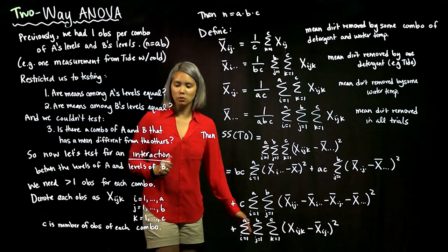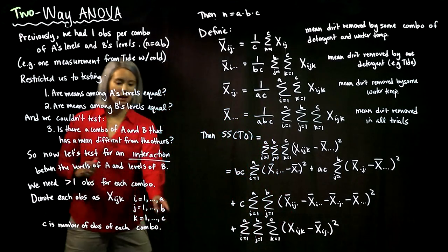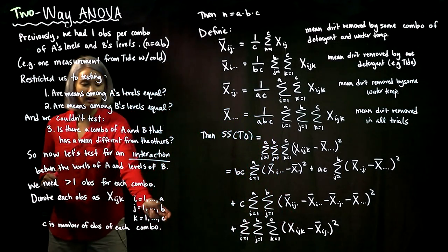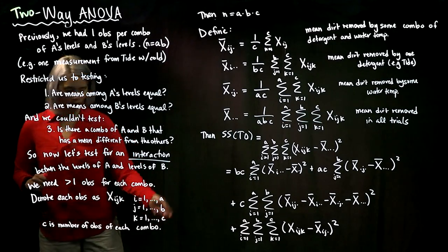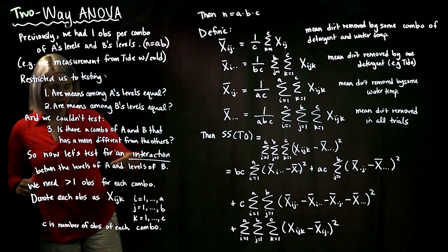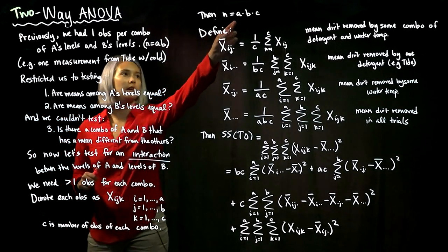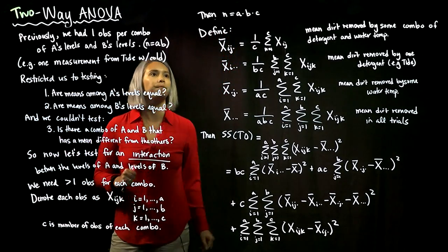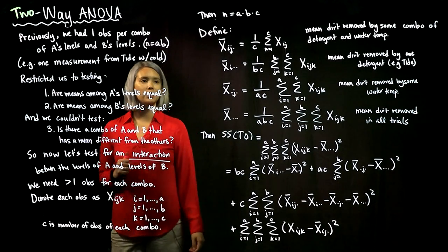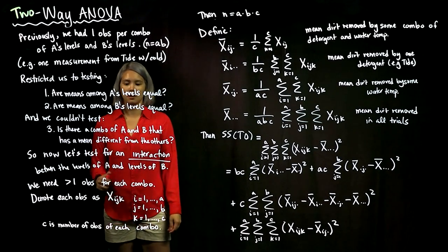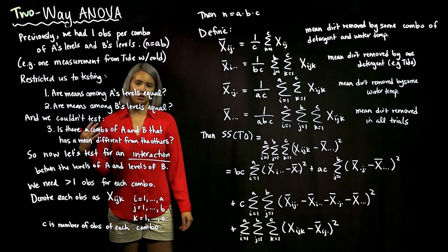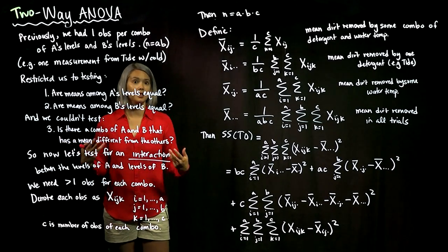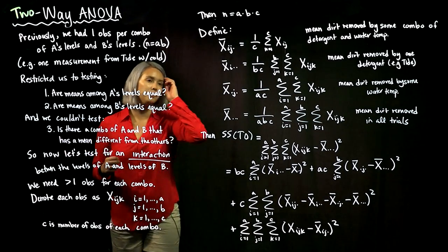Since we have A different levels of A, B different levels of B, and C different runs for each combination, our total sample size is A times B times C. That's our overall sample size. Just like we did before, we need to define some notation.